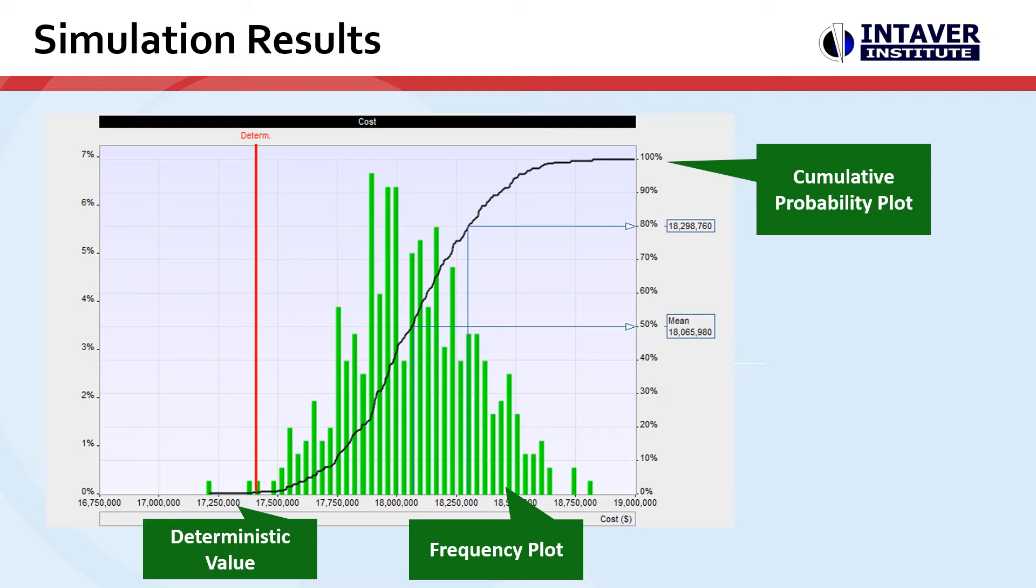A common view is a combined frequency and cumulative probability plot. This shows us the original schedule versus various confidence levels.